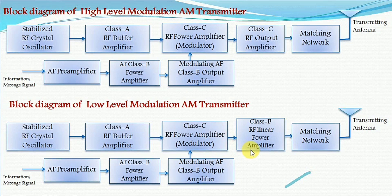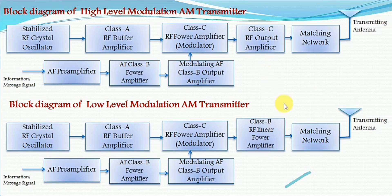After the modulator, in the high level modulation we are using a class C RF output amplifier, whereas in the low level modulation we are using a class B RF linear power amplifier. We will now see why we are using these respective amplifiers.